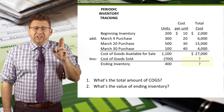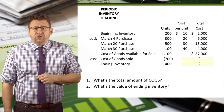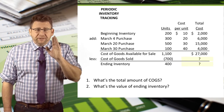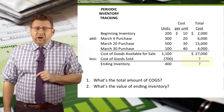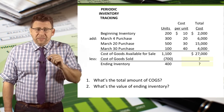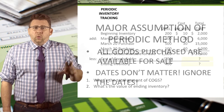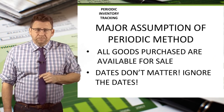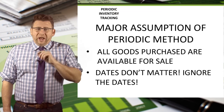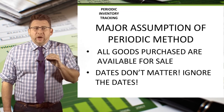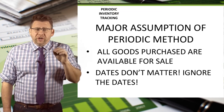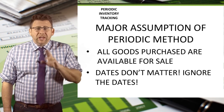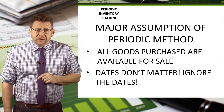So let's figure out which 700 units we sold using FIFO. But before we do that, there's a very important concept to be aware of when using the periodic method: we assume that all goods are available for sale. I know there isn't any way the March 30th purchase could have been sold on March 10th, but we ignore that fact when using the periodic method.